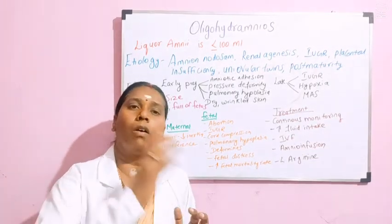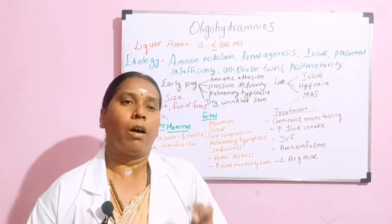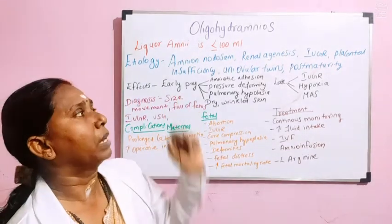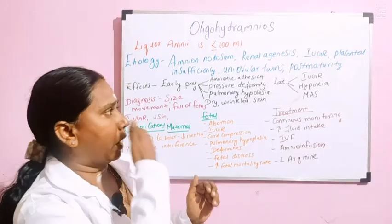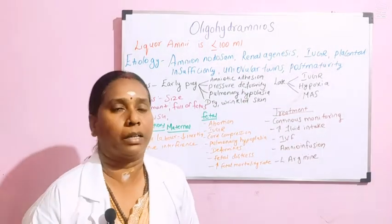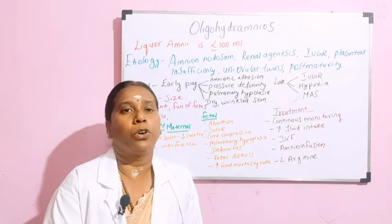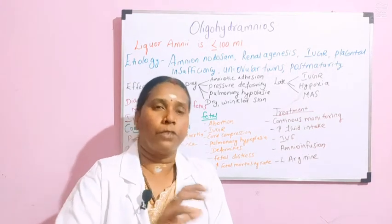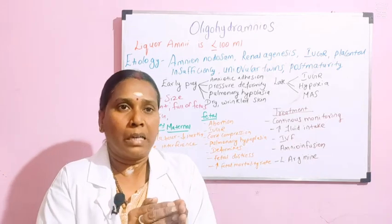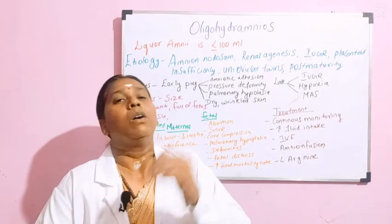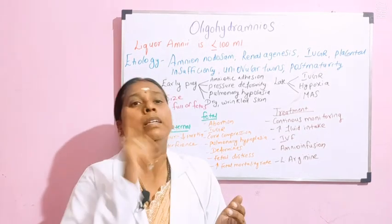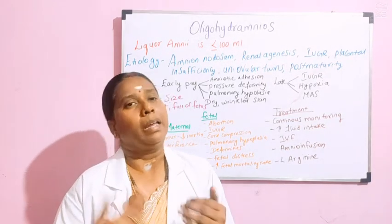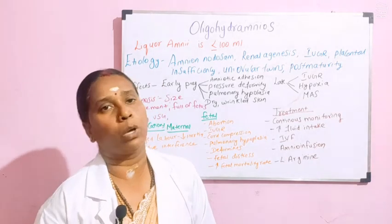Now let us discuss the effects. We describe effects in two categories: maternal and fetal. In early pregnancy, there is amniotic adhesion. With decreased fluid, there is no adequate protection for the baby, so the fetal parts get adhered and attached to one another. This can lead to deformities of the fetus — sometimes webbed neck, club foot, or variations in skull size.